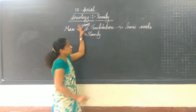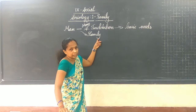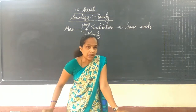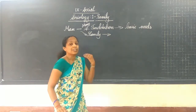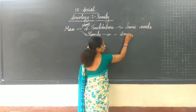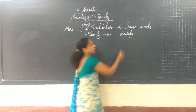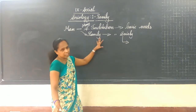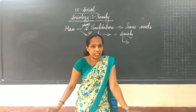Among these social institutions we can call the family as one of the most important. Almost all the activities of the society depend on it. We can consider the family as one of the most important social institutions of a society, and members of the family are considered members of the social institution.